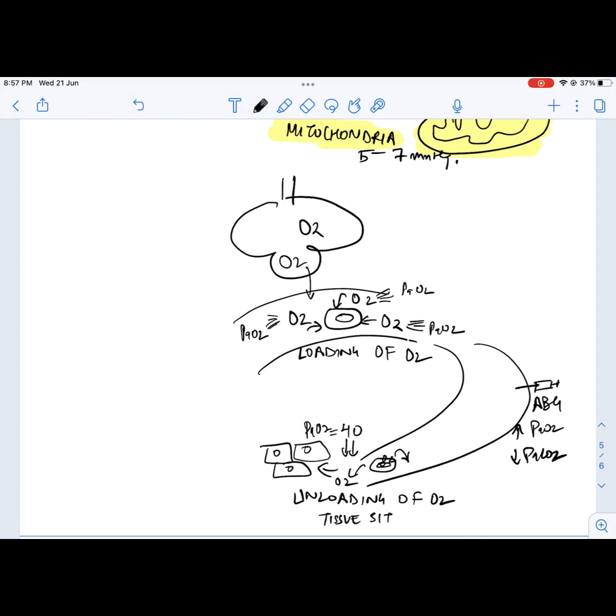This deoxygenated blood from tissues will go back to the lungs to get oxygenated, and the sample taken from this venous site will show increased PaCO2 and decreased PaO2.